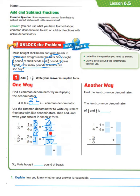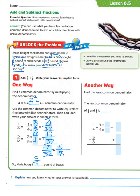Now we can add our numerators together. When adding fractions, we do not change our denominator. Our denominator stays 32, and eight plus 12 equals 20, giving us twenty thirty-seconds. Let's put that into simplest form by dividing by four: 20 divided by four equals five, and 32 divided by four equals eight. We know it's in simplest form because five is a prime number. So Malia bought five-eighths pounds of beads.